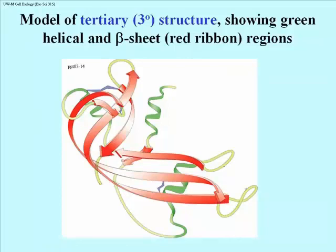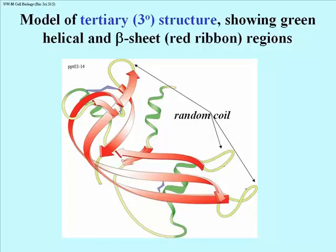Here's a model of three-dimensional structure showing a mix of helical and beta sheet, or red ribbon regions. Sometimes we refer to the regions of polypeptide that are neither helical nor pleated as random coil. This is a single polypeptide in which regions of pleated chains are linked together to form a pleated sheet, interspersed with alpha helical regions shown in green, connected by random coil regions.